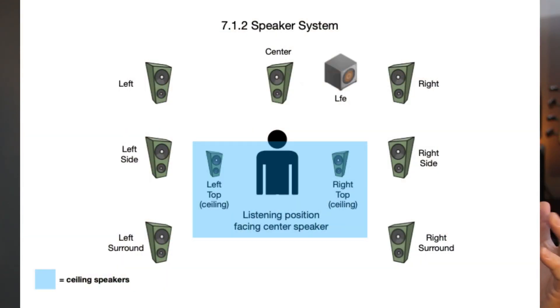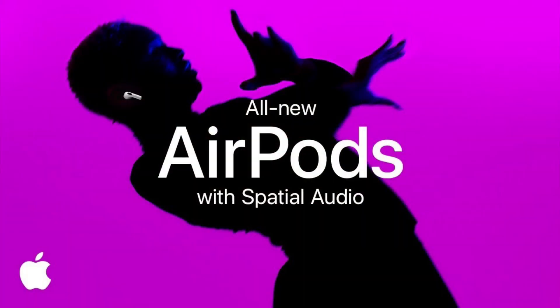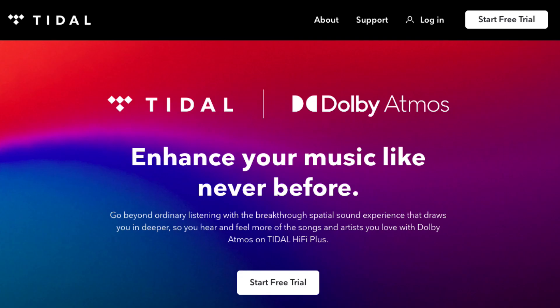You can do Dolby Atmos mixing in headphones. That's kind of the beauty, or the selling point, of Dolby Atmos — the end user can experience this spatial, immersive sound in many different speaker configurations: 7.1.2, 7.1.4, 9.1.6, whatever. But if you don't have a full speaker setup and want to listen in headphones, you can. Look at your iPhone or Android phone — with relatively current software and hardware, you are able to listen to Dolby Atmos.